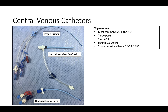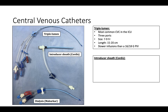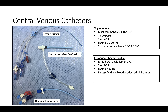The introducer sheath — commonly referred to by its brand name, Cordis — is a large bore, single lumen line, typically 7–9 French and approximately 10 centimeters in length. Because of its larger width and shorter length, the introducer sheath allows for the most rapid fluid and blood product administration of all catheter types, making it the choice for hemorrhagic shock. It is also wide enough for pacing wires, pulmonary artery catheters, and triple lumen catheters to be inserted through it, so it is used for heart block requiring temporary pacing or cardiogenic shock requiring a pulmonary artery catheter.